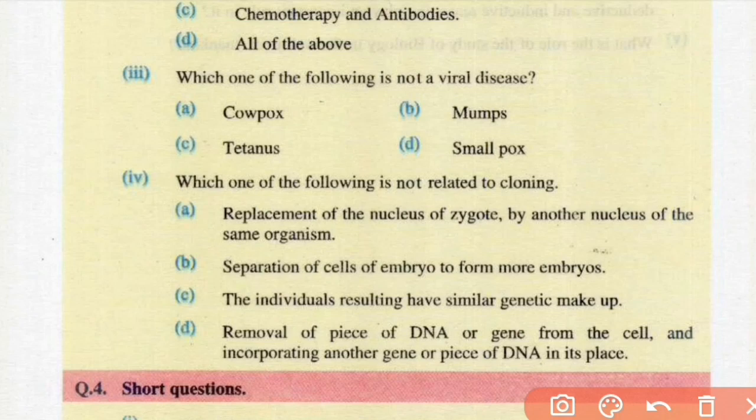No. 3: Which one of the following is not a viral disease? En mein se koun si viral disease nahi hai? Options: Cowpox, Mumps, Tetanus, Smallpox. Baaki teeno viral diseases hain jabke Tetanus viral disease nahi hai. No. 4: Which one of the following is not related to cloning? En mein se koun sa option cloning se relate nahi karta? Right answer is D: removal of a piece of DNA or gene from the cell and incorporating another gene or piece of DNA in its place.